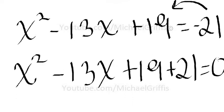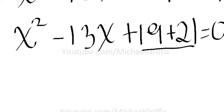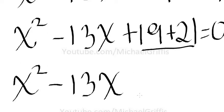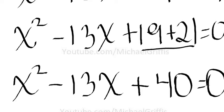Setting it equal to zero. Let's combine these two like terms, so we have x squared minus 13x plus 40 equals zero.